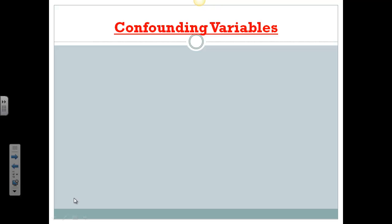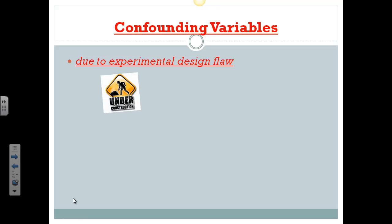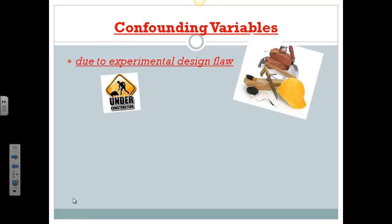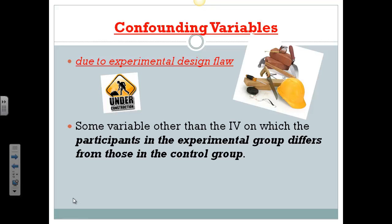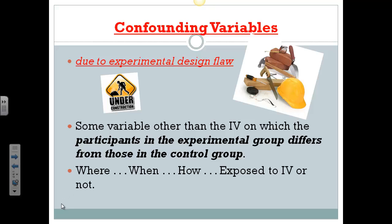Confounding variables are one of those term pairs that are often misconstrued. A confounding variable is a built-in design flaw — it's what happens when the experimenter makes a mistake building the experiment. We screwed up when we constructed the experiment, and some of those screw-ups cause a difference in the dependent variable other than the IV. This can relate to where we test subjects, when we test them, how we test them, or how they're exposed to the independent variable or not.